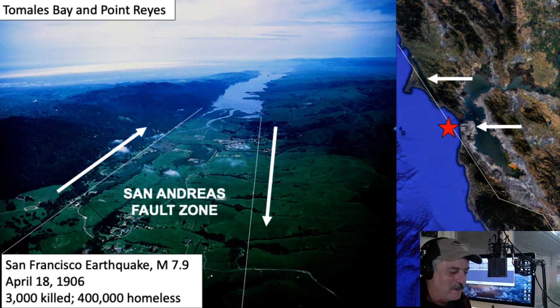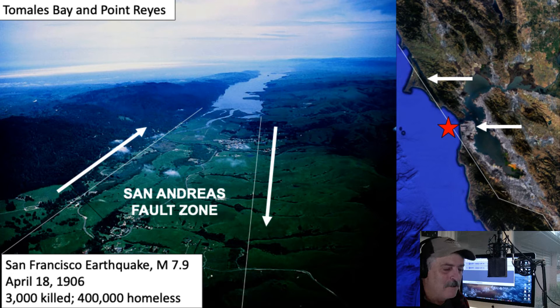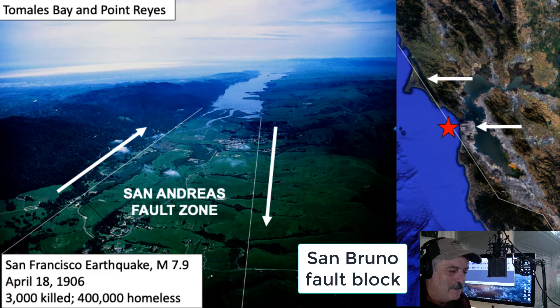It was a 7.9 earthquake — a massive earthquake. San Francisco is just on the opposite side of that fault zone on the east side. There are like five or six different fault blocks in there — it's pretty complicated when you look at all the structural and geologic features that constitute that part of California.